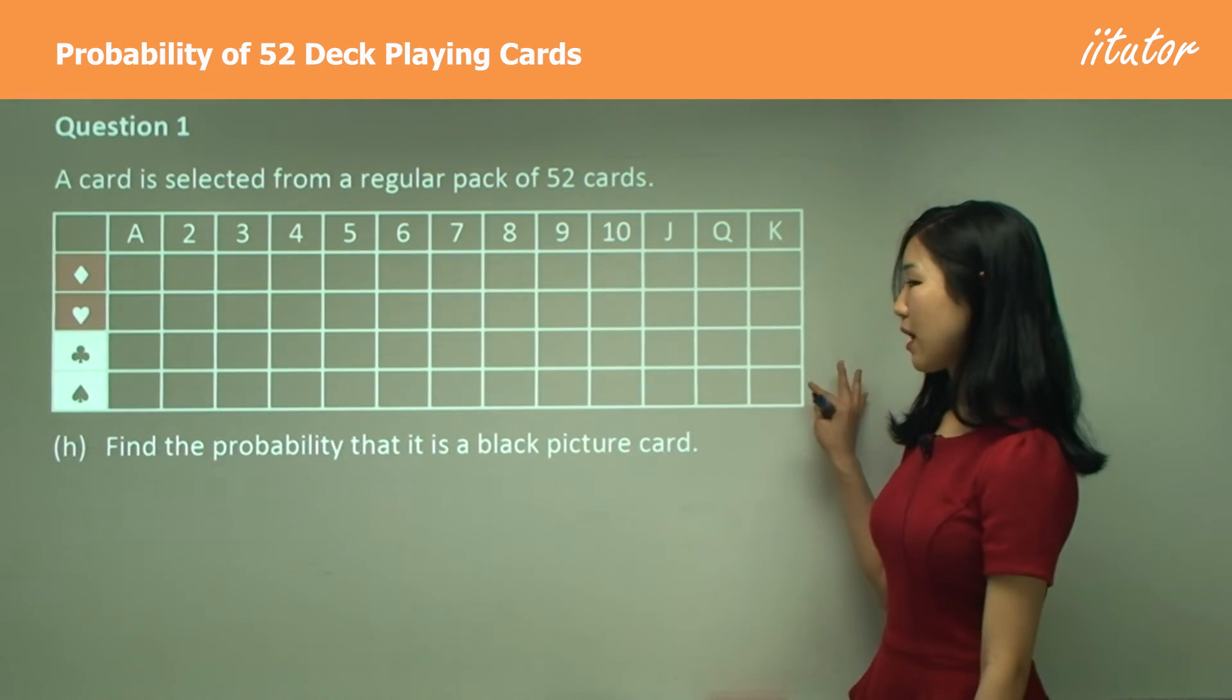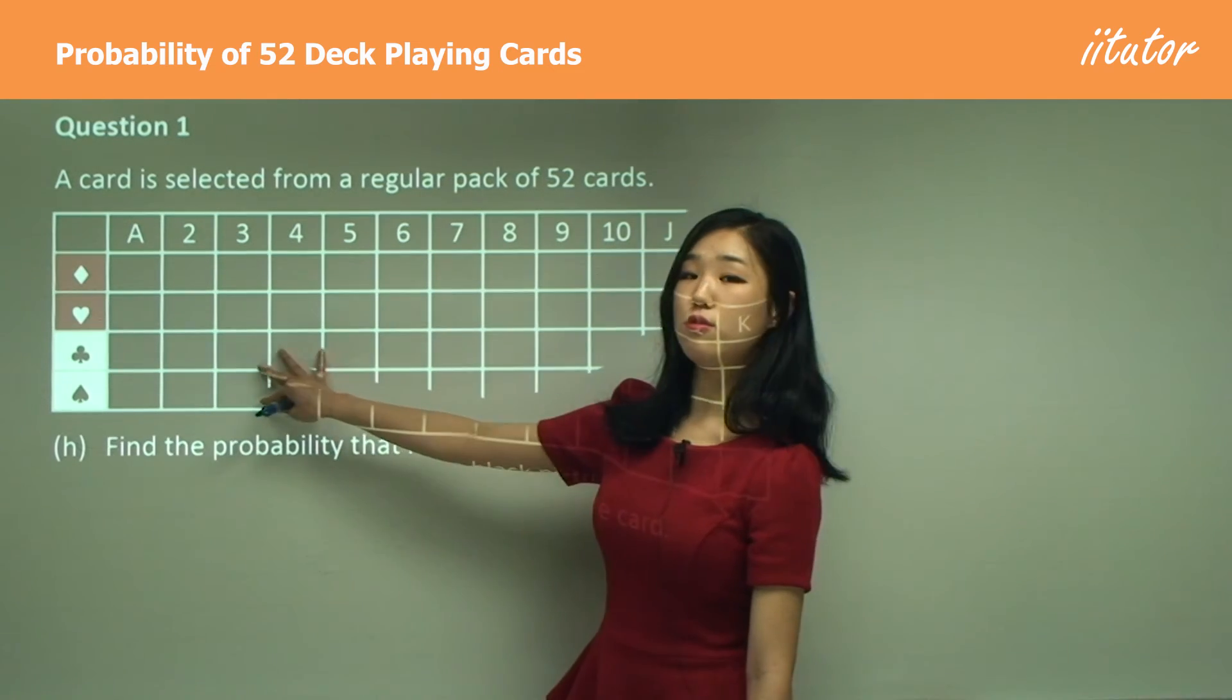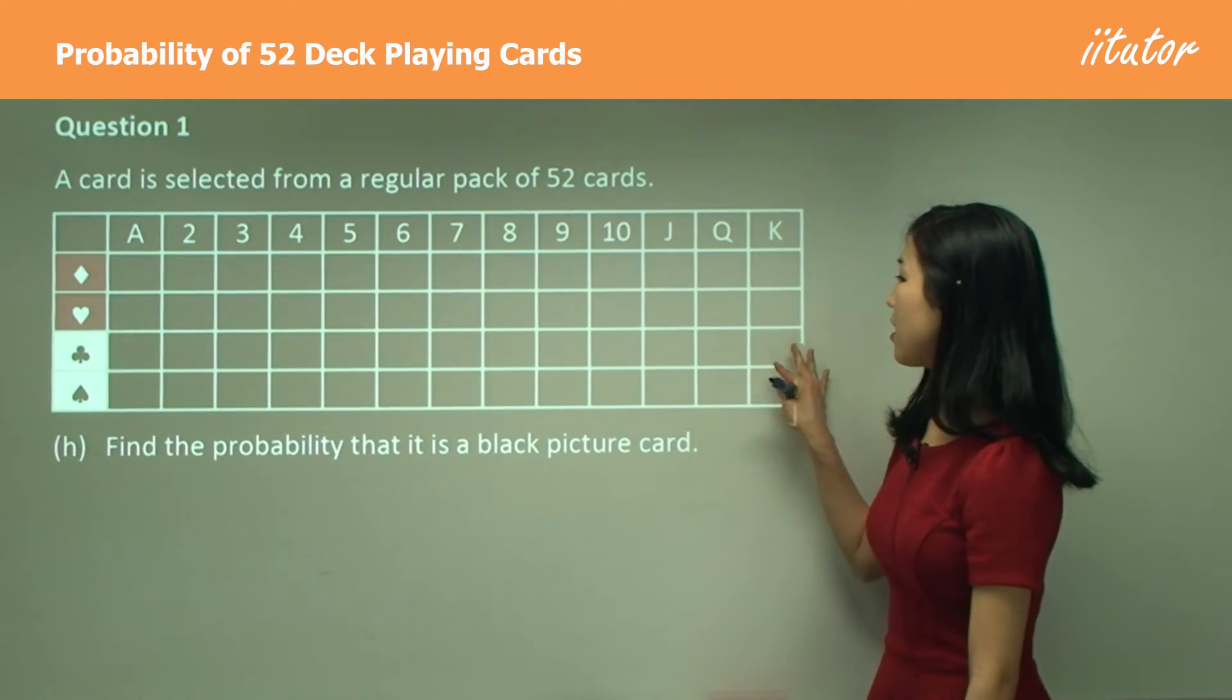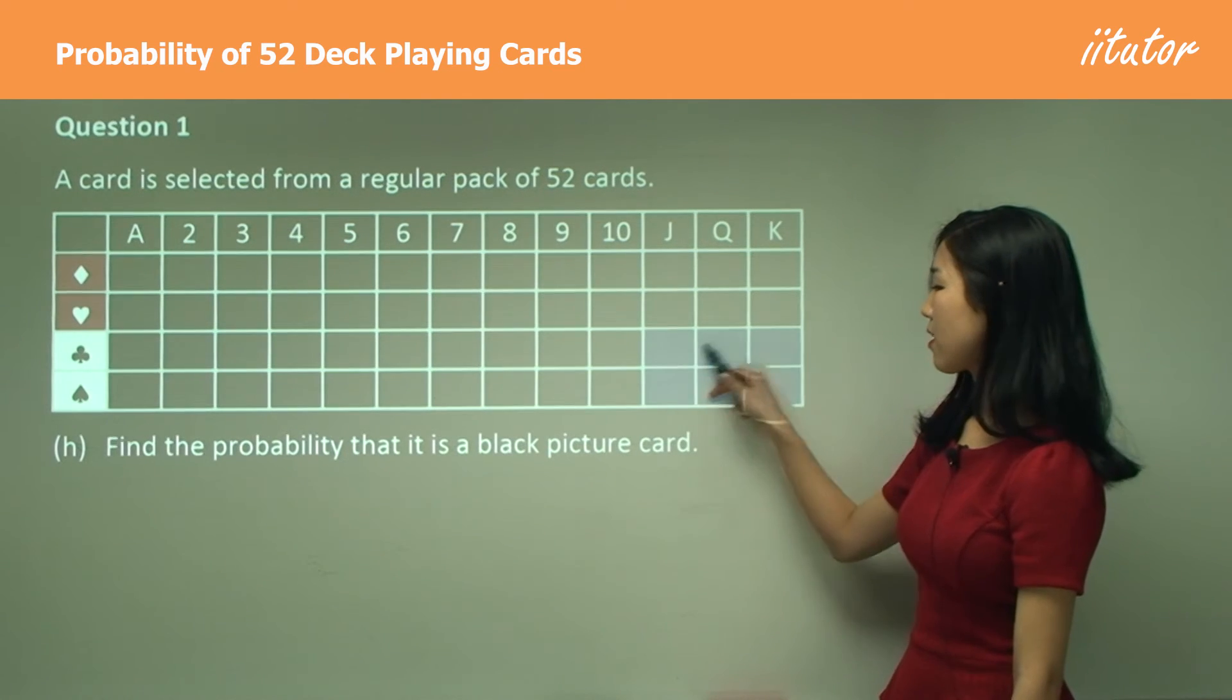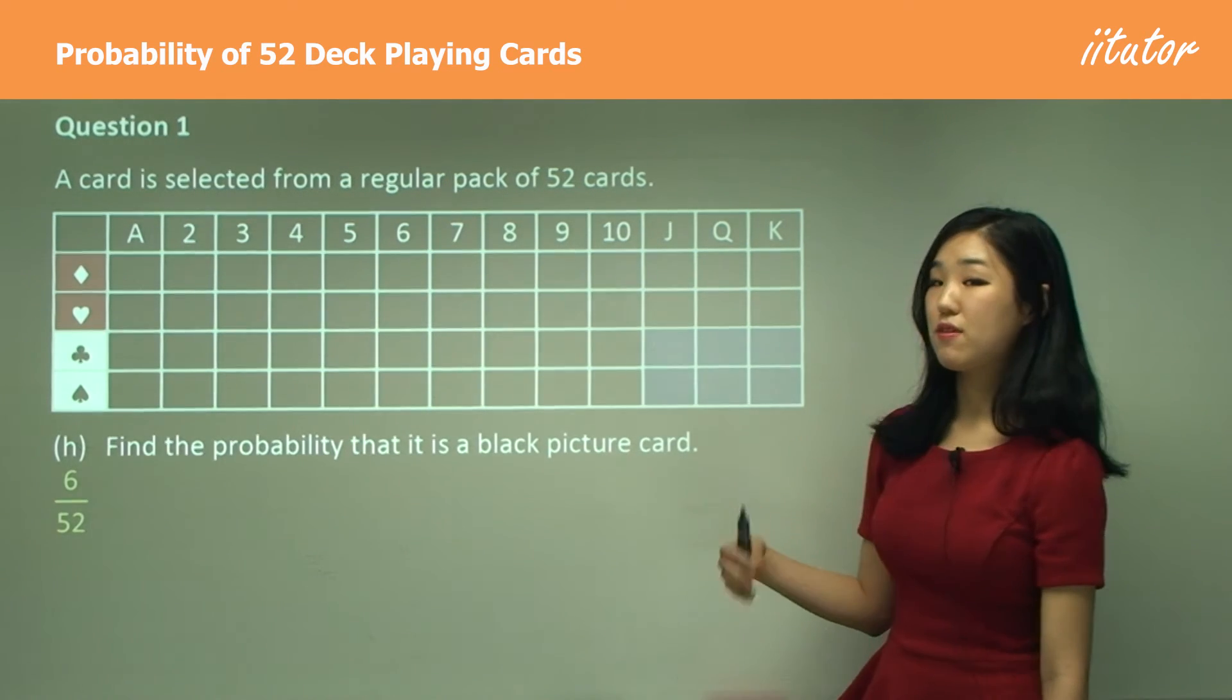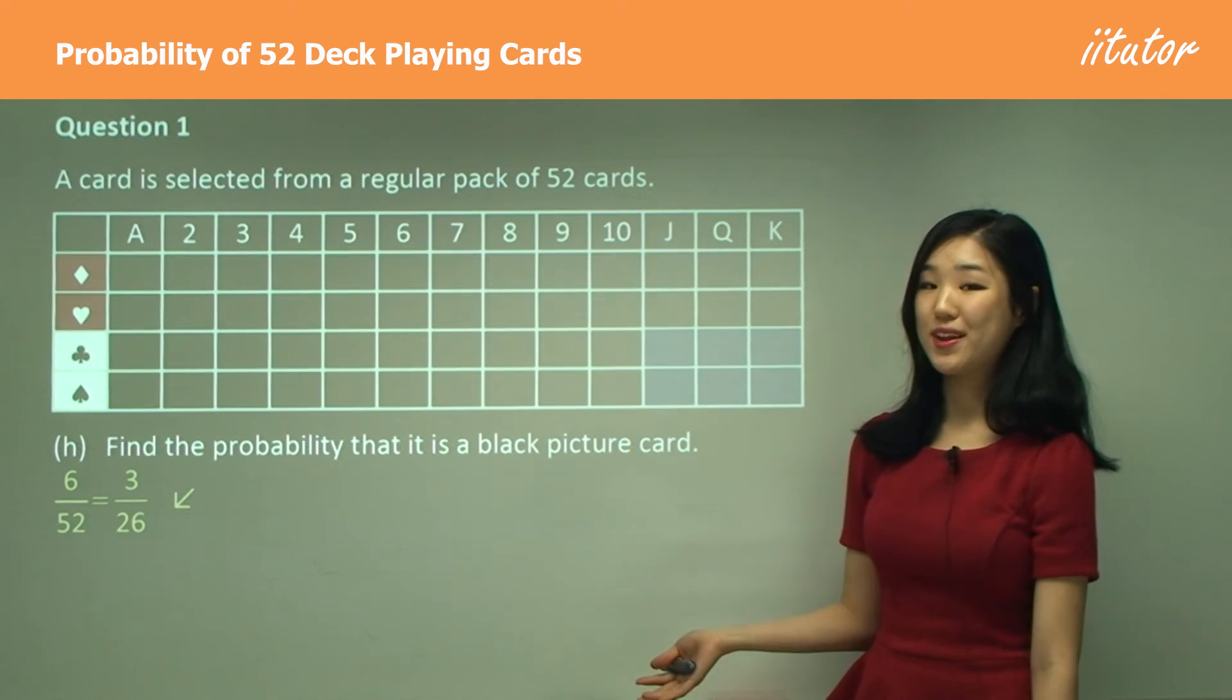Part h: Black picture card. Black, we know, is the bottom two rows, and if it's a picture card, it's out of these three. So it's simply this part here—6 out of 52, which is simplified to 3 over 26.